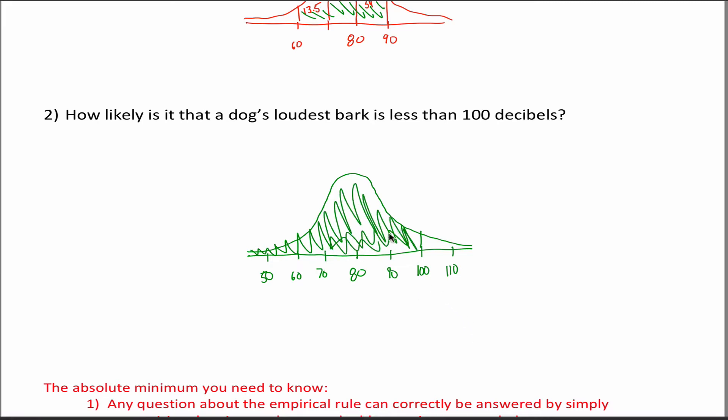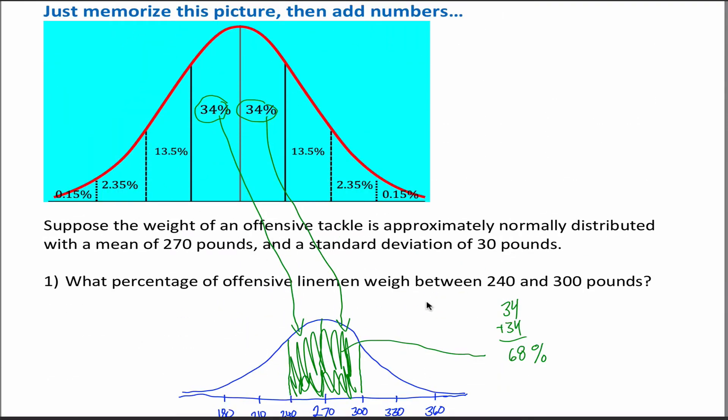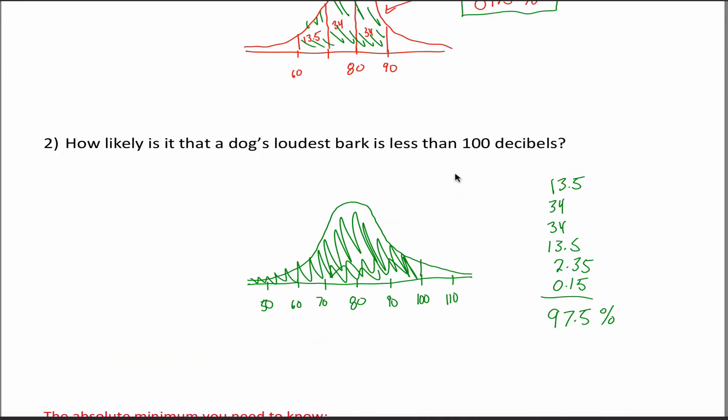So all I got to do is add up all those numbers. Let's see. This one here is 13.5. This next one is 34. This next one is 34. This next one is 13.5. And this last one is what? 2.35, I believe. Double check from our original picture, which presumably you have memorized. This is 2.35. Oh, and then I got a 0.15. There's two more. 2.35 and 0.15. And you add up all these numbers and you get 97.5, I think. And you can double check that. Pull out a calculator. Add up those numbers. I don't have to show you how to type numbers into a calculator. You should get 97.5. So that's the answer. How likely is a dog's loudest bark is less than 100 decibels? There's a 97.5% chance that that would happen. In other words, this shaded area under the curve is 97.5. And that's it. Those are the examples.